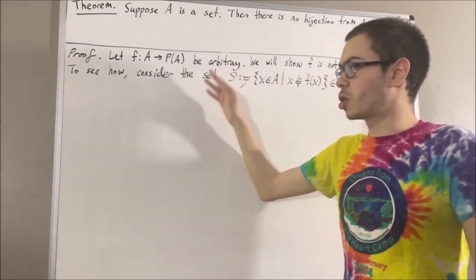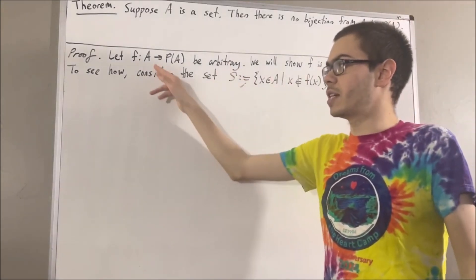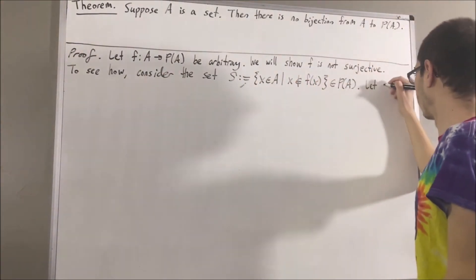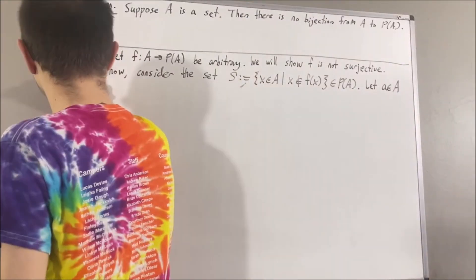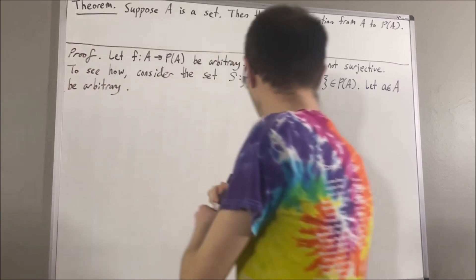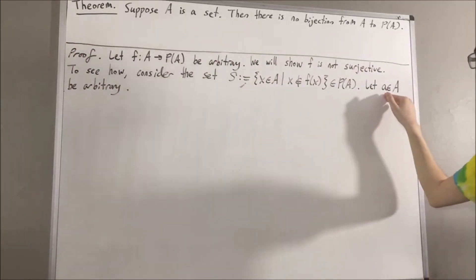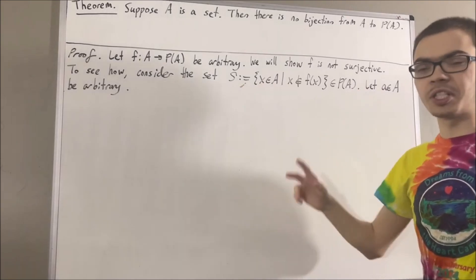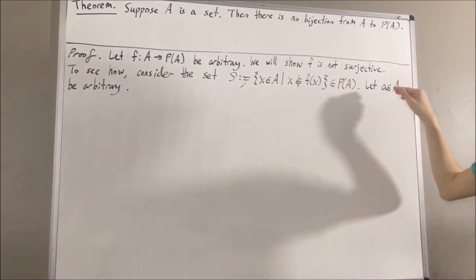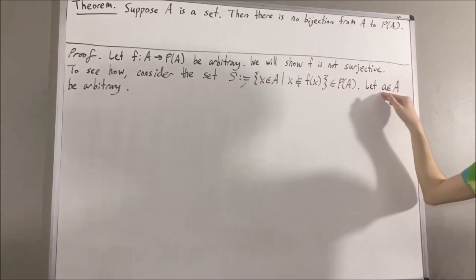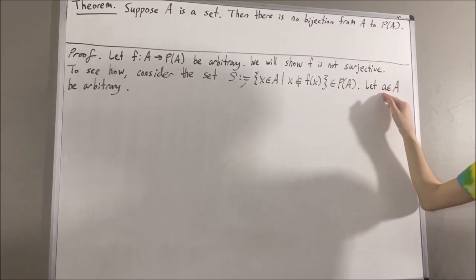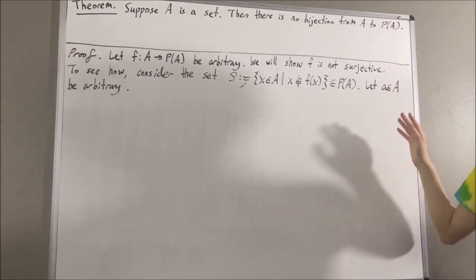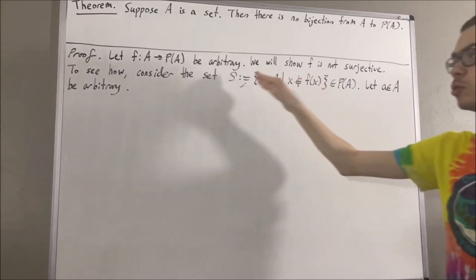So to do that, let's consider an arbitrary element in the domain of F — I'll call it a. From here, we want to show that F(a) is not equal to S. To show that, we're going to split this up into two cases: either a is an element of F(a), or a is not an element of F(a). And in either case, we're going to show that F(a) is not equal to S.